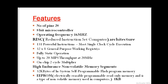The ATmega328P has 32 general-purpose working registers, with each register being 8-bit. It supports fully static operation up to 20 MHz, and features an on-chip two-cycle multiplier. Now we will move towards the memory segment of the microcontroller.